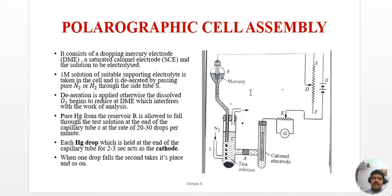Moving to the polarographic cell assembly: the apparatus is set up to measure the current-voltage relationship. A voltage is applied and the current is measured. The setup must include a cathode, anode, and current-measuring and voltage-measuring instruments.